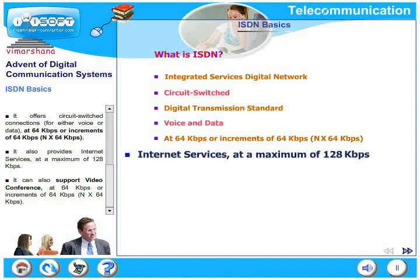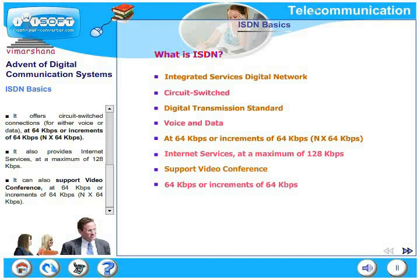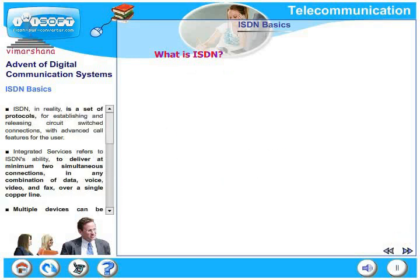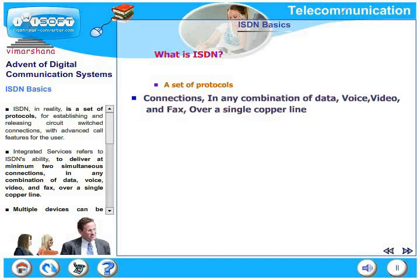ISDN provides internet services at a maximum of 128 kilobits per second. It can also support video conferencing at 64 kilobits or increments of 64 kilobits such as 128, 256, 384, and so on. In reality, ISDN is a set of protocols for establishing and releasing circuit-switched connections with advanced call features for users. A special feature of ISDN is that it supports two simultaneous connections in any combination of data, voice, video, or fax over a single copper line.